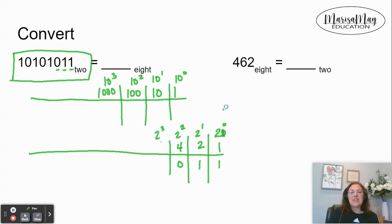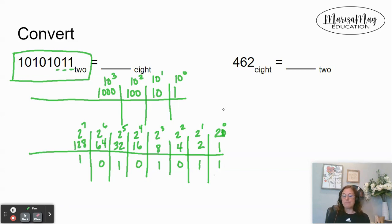And then 2 to the fourth which is 16, and you have none of those. I'm following my pattern of exponents here. 2 to the fifth which would be 32, and you have one of those. Keep going. 2 to the sixth is 64 and we have none of those. And then one more is 2 to the seventh - we have 128 of those, and we have one.